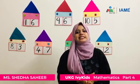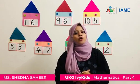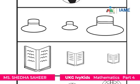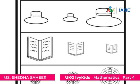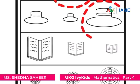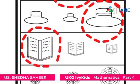Biggest and smallest. Let's look at some examples with the help of some objects. Let's find out which is the biggest ball in the first group — the second ball is the biggest ball. Now let's find out which is the biggest hat — the third one is the biggest hat. Now let's find out the biggest book — the first one is the biggest book.